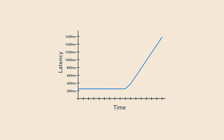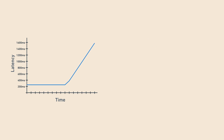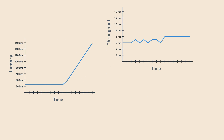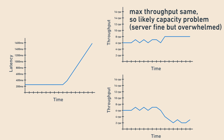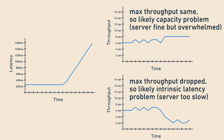Let's go back to the beginning of the video where we got paged in the middle of the night. To fix the increasing latency, it helps to figure out if the latency is queuing latency or intrinsic latency. To do this, look at throughput as well as latency. If throughput has held constant, the increased latency might be from queuing latency — perhaps from a spike in incoming traffic — and you should increase capacity by adding more threads. If throughput has decreased, maybe intrinsic latency has increased, causing max throughput to drop, and you should dig deeper into why.